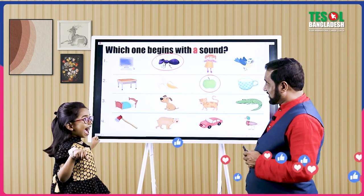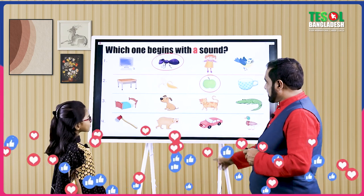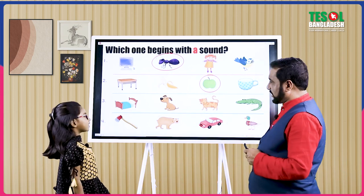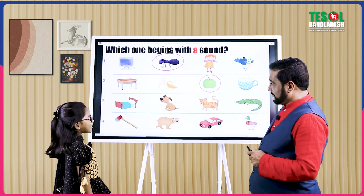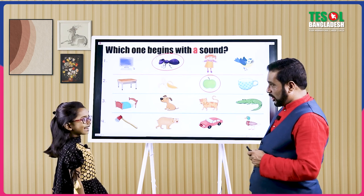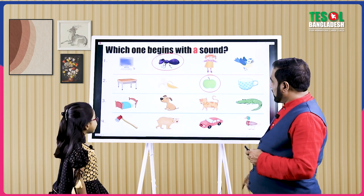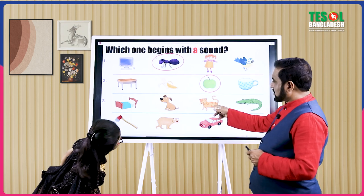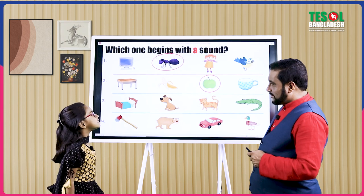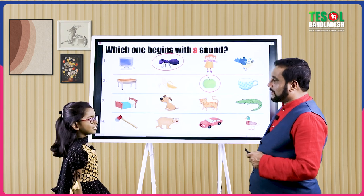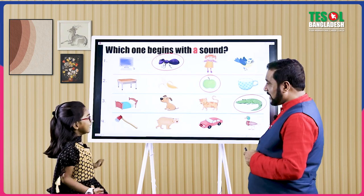And now the third row. There are four pictures. Which one begins with A sound? Alligator. Alligator — are you sure? Yeah. I don't think so. I think cat begins with A sound. No, it begins with C sound. Oh yeah, that's true. Let's check then. Here you go.